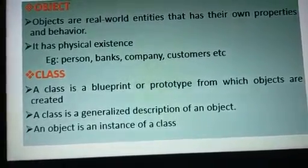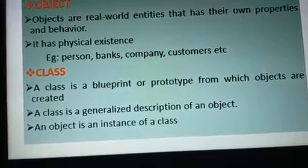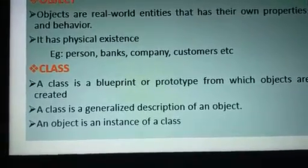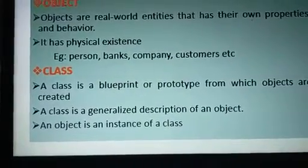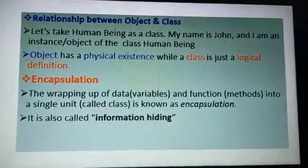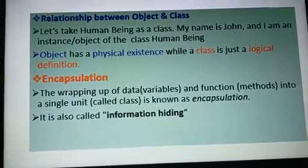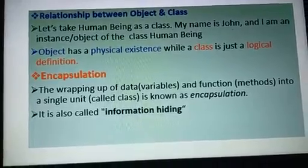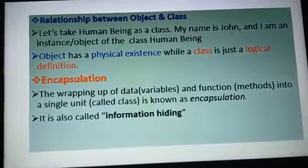A class is a generalized description of an object. In a class, an object is called an instance. For example, if you are in a college, you are one of the objects — that is the relationship between object and class. A human being is a class, and an individual person is an object — an instance of that class. A physical object is an instance of a class.